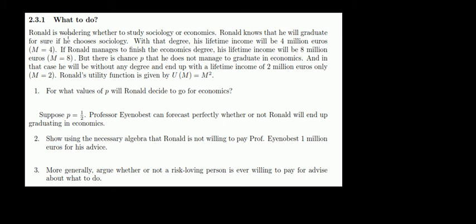Let's have a look at this exam question. We're considering whether to study sociology or economics. We know that we will graduate for sure from sociology, with an income of 4 million euros. If we graduate from economics, our income would be 8 million. However, there's a probability p that we won't graduate in economics, and if we don't, our income would only be 2 million. Our utility is income squared.